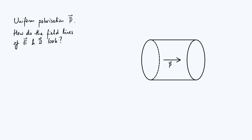Hello everyone. In today's video we're going to take a look at the bar electret, which as the name implies is the electric analog of a bar magnet. The analogy is that while a bar magnet has a uniform magnetization vector within its volume, a bar electret has a uniform polarization vector within its volume.